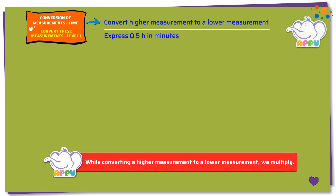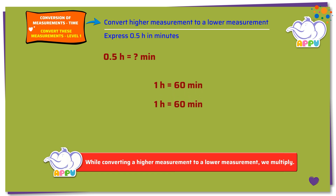Here we need to find how much is 0.5 hours in minutes. We know that 1 hour equals 60 minutes. To find how much is 0.5 hours, we multiply both sides by 0.5. We get 0.5 times 1 hour equals 60 minutes times 0.5.